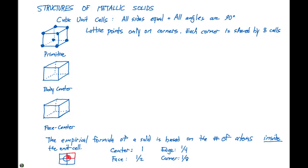Going back to our primitive cubic cell, we have eight atoms and all eight of those atoms are on a corner. This atom is shared by eight different unit cells, so only one eighth of the atom is in the unit cell. So if we do eight times one eighth, there's going to be one atom per unit cell. That's our primitive cubic.